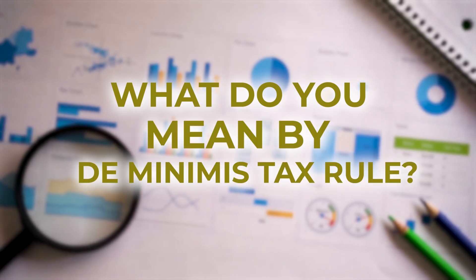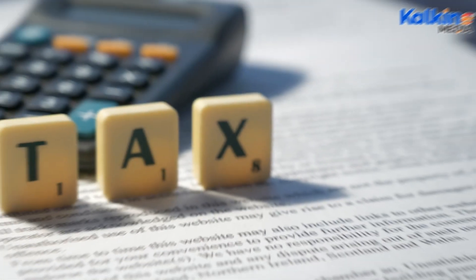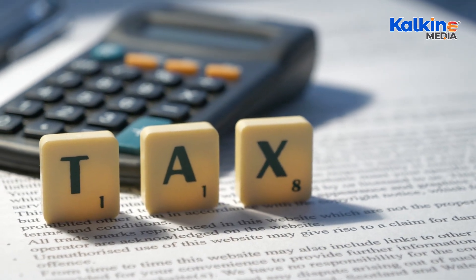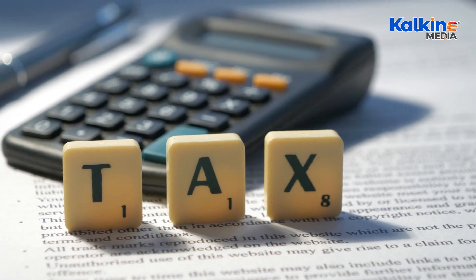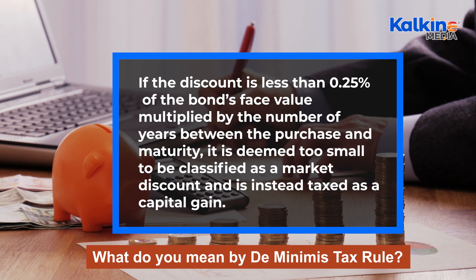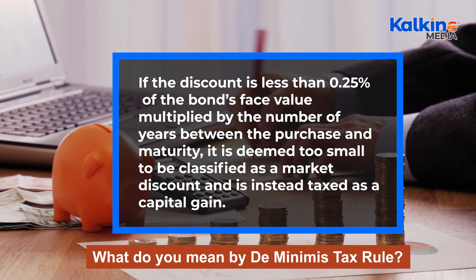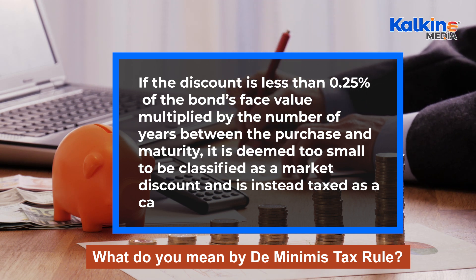The de minimis tax rule establishes a threshold to determine when a bond purchased at a discount should be treated as a capital gain rather than ordinary income for tax purposes. If the discount is less than 0.25% of the bond's face value multiplied by the number of years between the purchase and maturity, it is deemed too small to be classified as a market discount and is instead taxed as a capital gain.